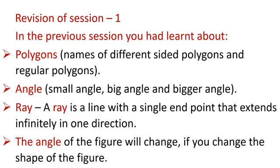Polygons are closed figures made of straight lines. The names of different sided polygons are: 3 sided polygon is called a triangle, 4 sided polygon is called a quadrilateral, 5 sided polygon is called a pentagon, 6 sided polygon is called a hexagon, 7 sided polygon is called a heptagon, 8 sided polygon is called an octagon, 9 sided polygon is called a nonagon, and 10 sided polygon is called a decagon.